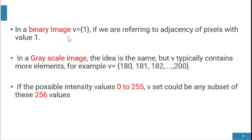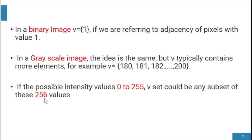In binary images, V equals {1} because it refers to adjacency of pixels with value one. In grayscale images, we can get any value from 0 to 255, so V could be a subset of any values within those 256 values. For example, V could equal {180 to 200} — any subset of the 256 possible intensity values.